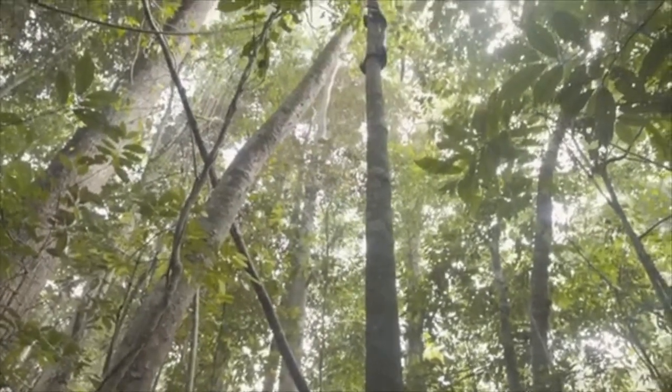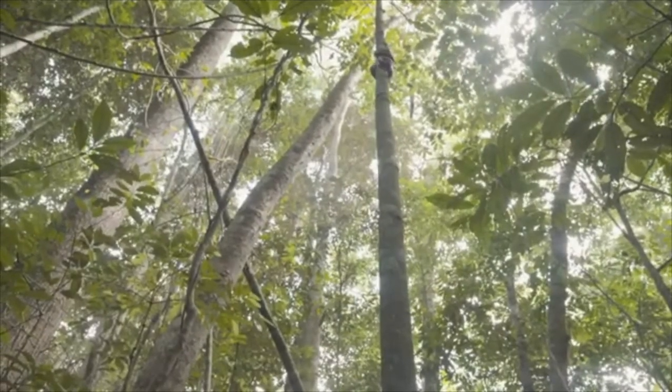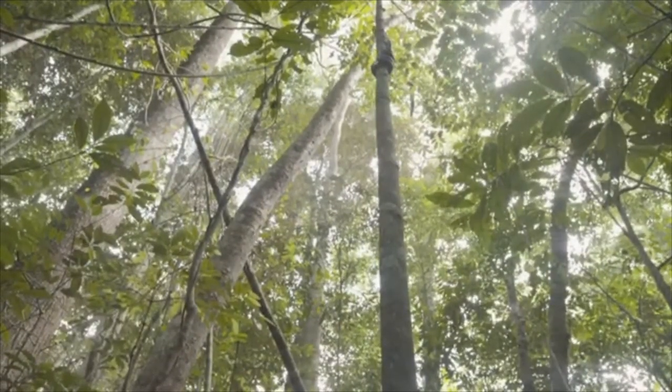Snakes also have forked tongues which they flick out in different directions to smell their surroundings. That lets them know when there's danger or food is nearby.